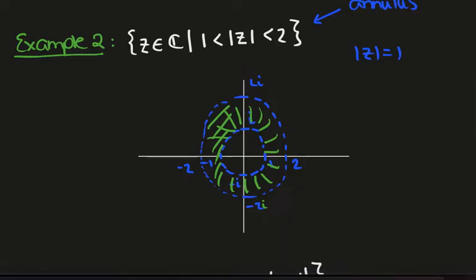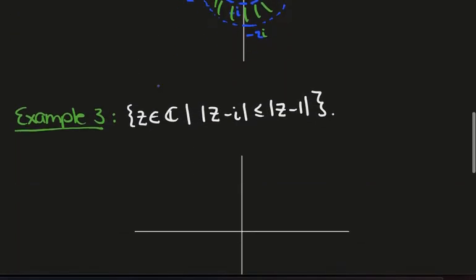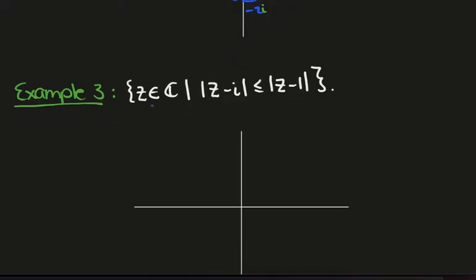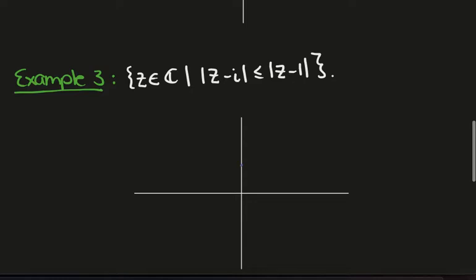Okay, let's look at another example. The set of all z in the complex plane, such that |z minus i| is less than or equal to |z minus 1|. Okay, so intuitively, what we want here is to look for all the points that are closer to i than they are to 1.